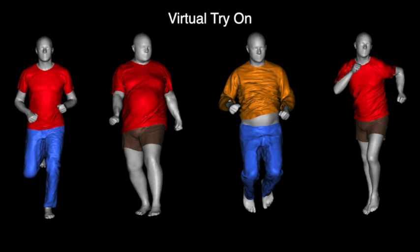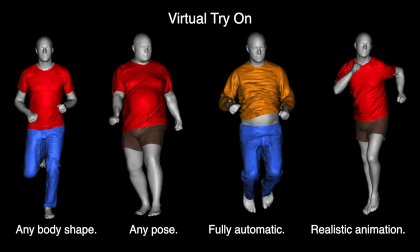Now that we have an avatar, we'd like to dress it. This must work for any body shape, in any pose, be fully automatic, and animate realistically. To accomplish this, we have developed a virtual clothing system called Drape.